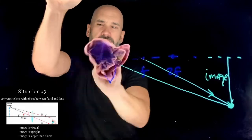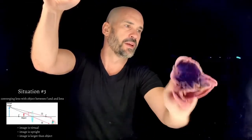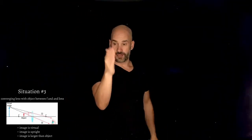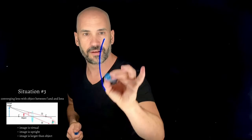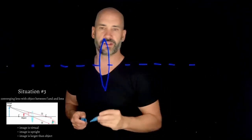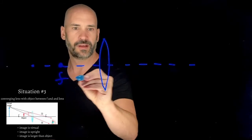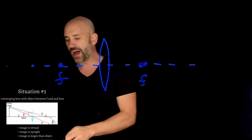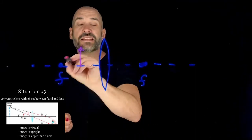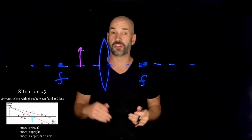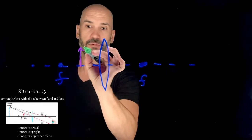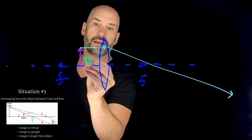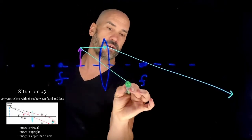Situation number three: the object is now going to be within the focal length. Go ahead and make your prediction. I'll draw another lens with my center line and focal lengths marked symmetrically. Our object is inside the focal length. I'll use two special rays again — one that goes in parallel and then cuts through the focal length.